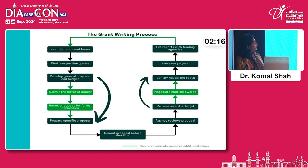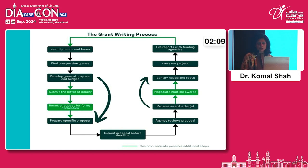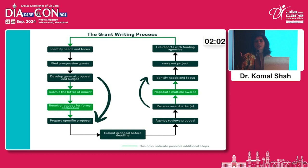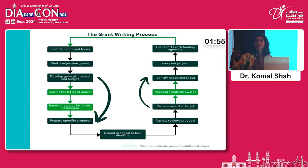The entire grant cycle works like this: you write something in your area of interest, submit the letter of inquiry, prepare a specific proposal, receive either approval or feedback from the agency, work on the feedback, and ultimately receive a grant letter followed by funding. Once you receive the funding, you are required to give them periodic reports and updates on the grant.